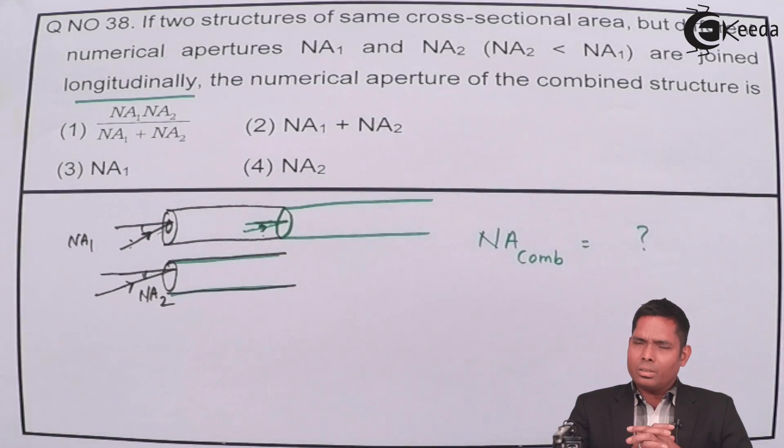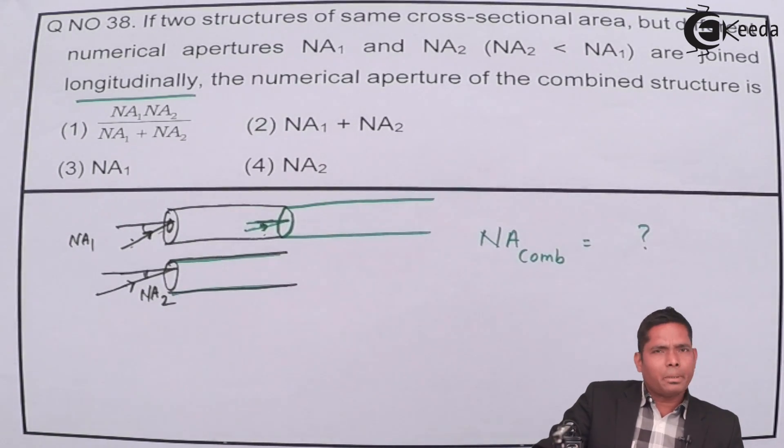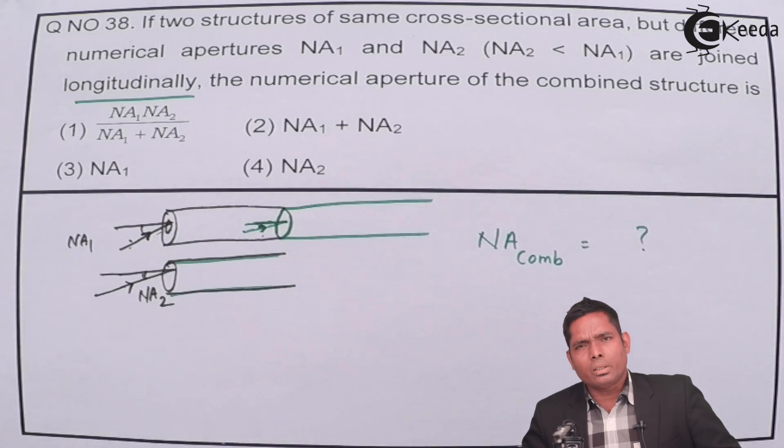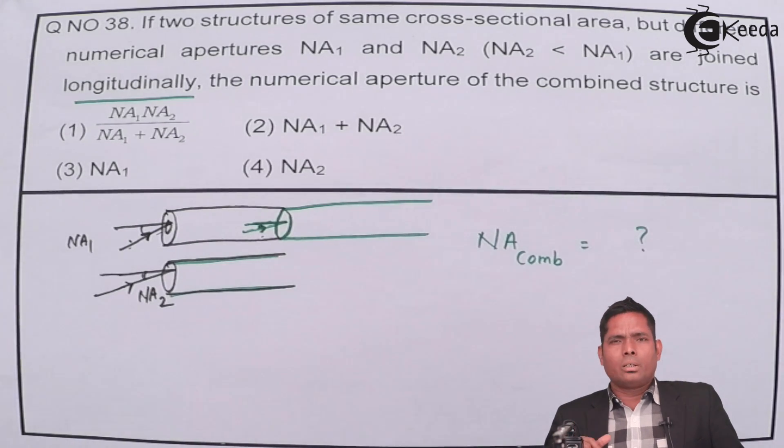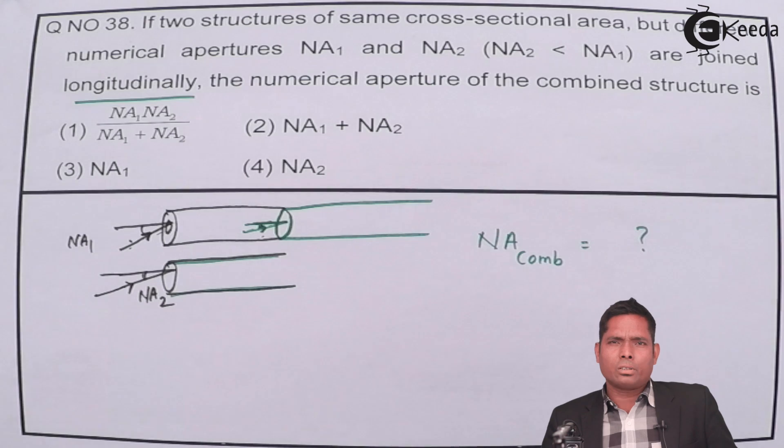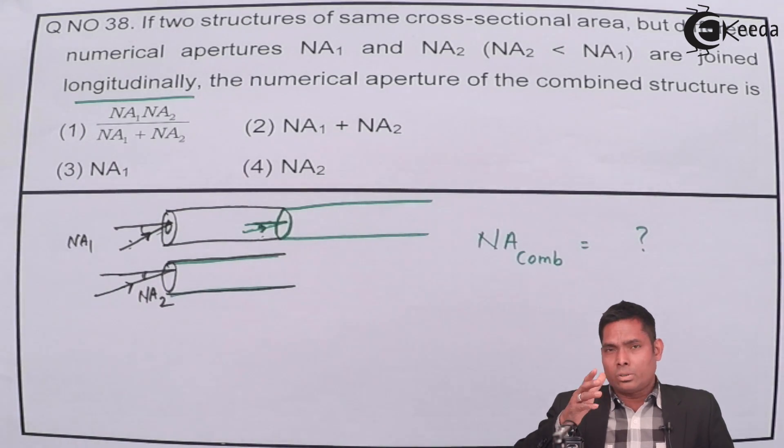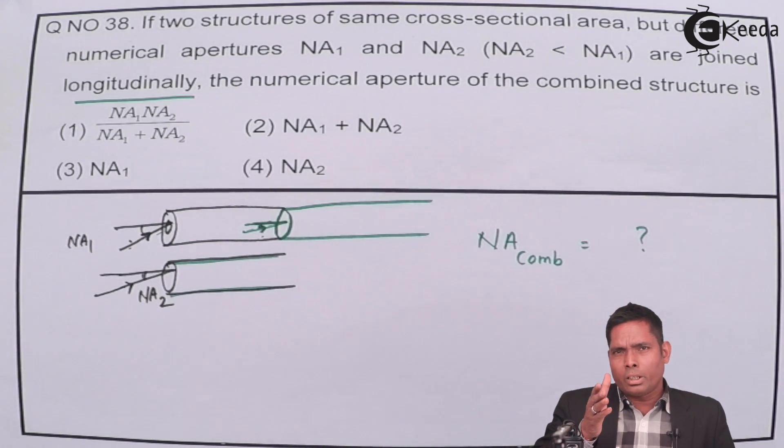In the first structure, suppose that the critical angle is 30 degrees and the second one the critical angle is 20 degrees. That means if the angle of incidence is more than the critical angle, then only the total internal reflection will take place. In case of 20, then it's okay, because 20 is the minimum, then if it is more than 20 then also there will be total internal reflection.